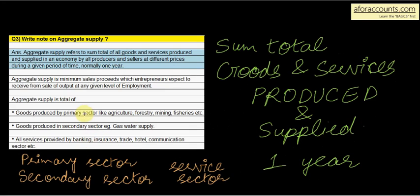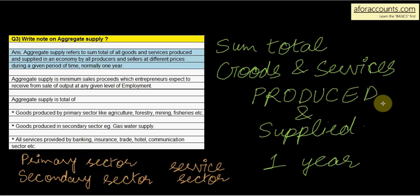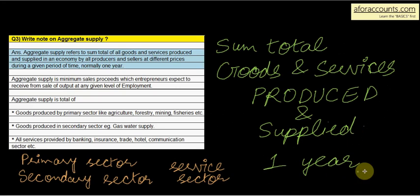Primary sector, secondary sector, and service sector — these are the three sectors. If we total the supply of all of these, we get aggregate supply, because it is the sum total of all goods and services produced and supplied in an economy by all producers and sellers at different prices during a given period of time, normally one year.